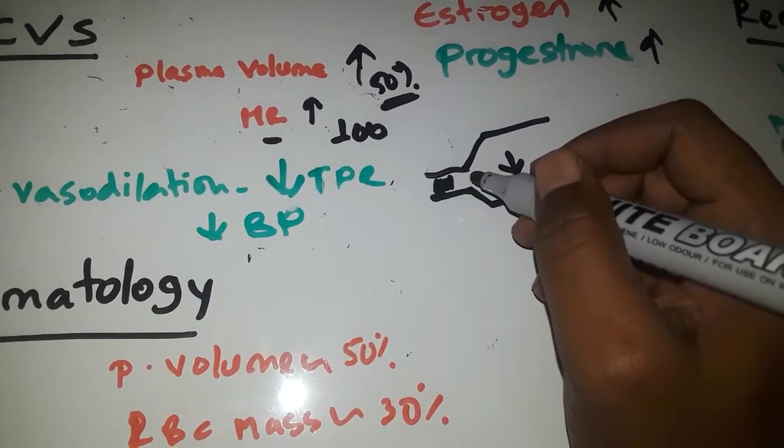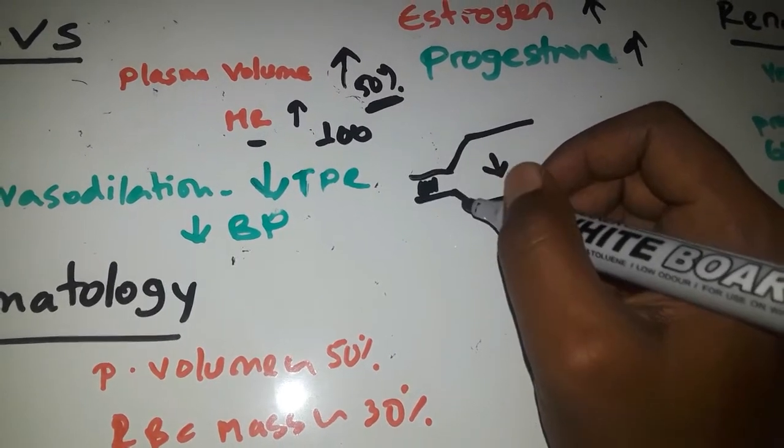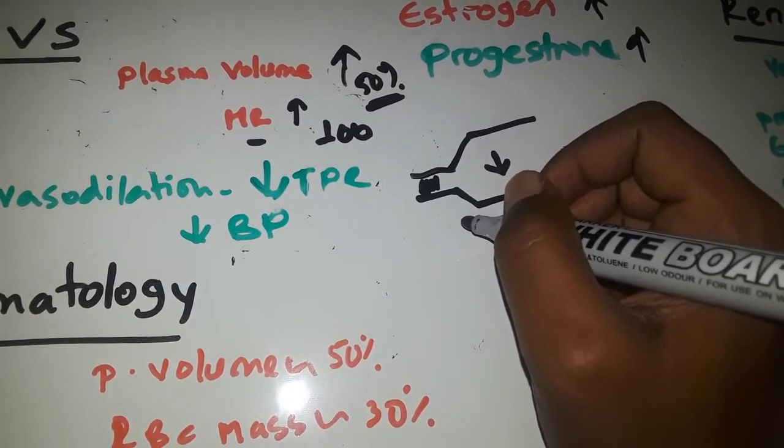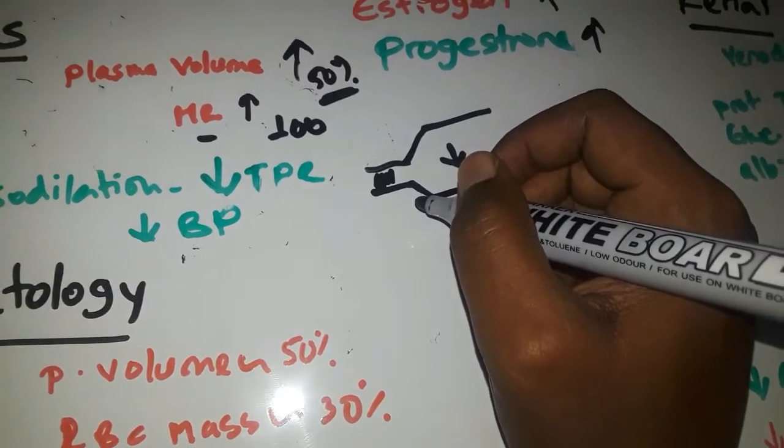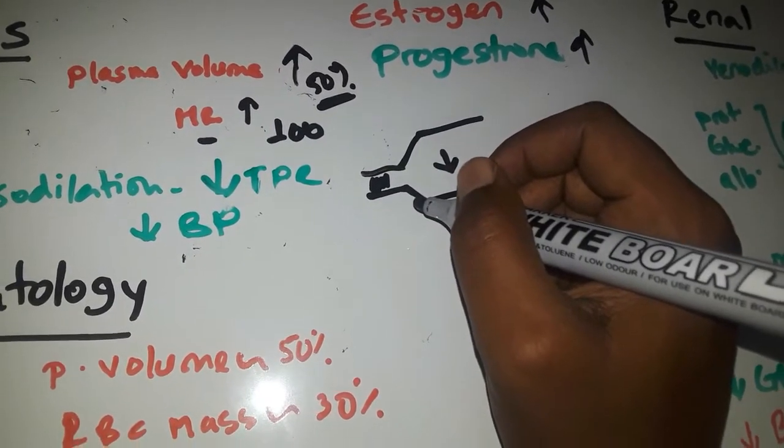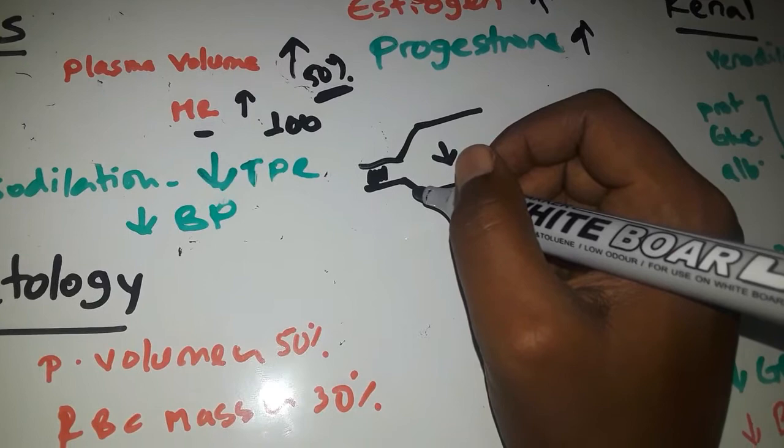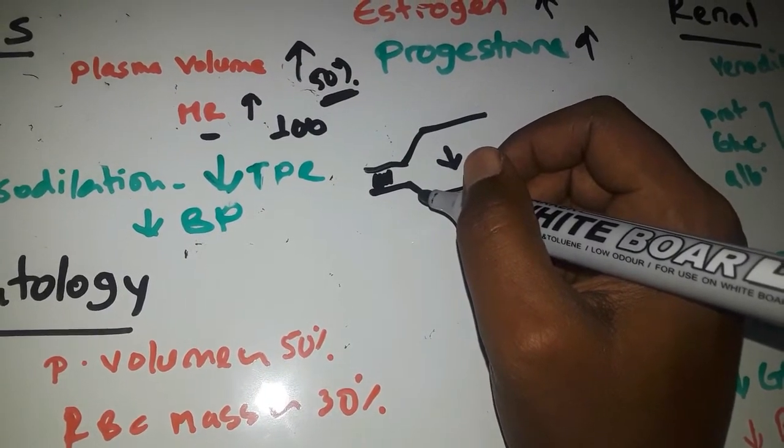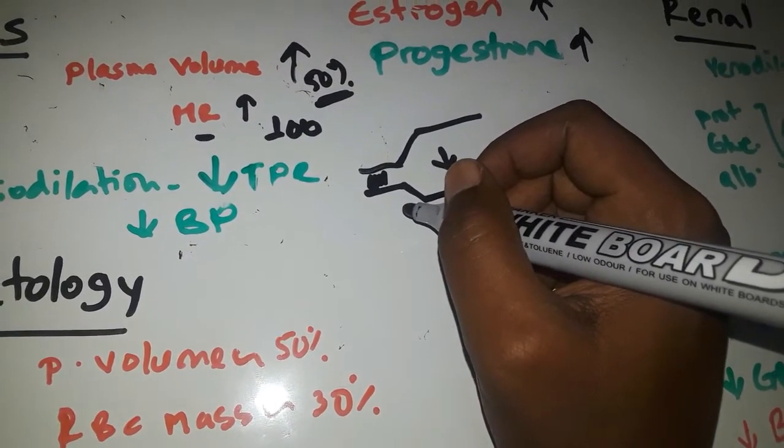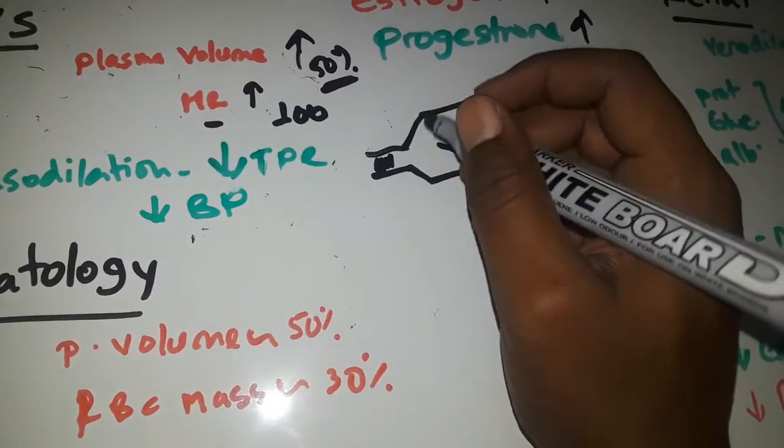Blood pressure will be low in pregnancy, especially in the first and second trimester. In the third trimester, it will be normal. Any hypertension in pregnancy is pathologic. There is no physiologic hypertension in pregnancy.